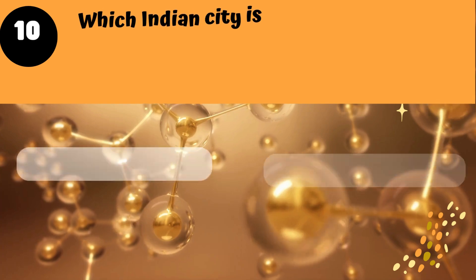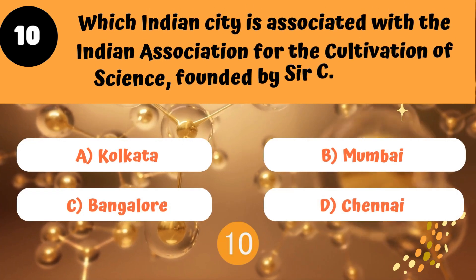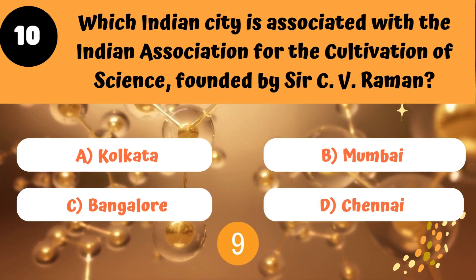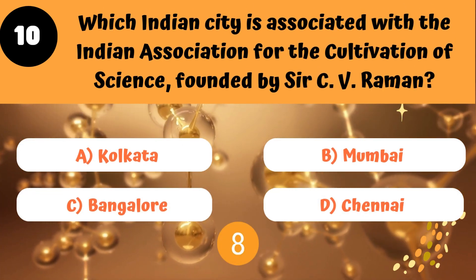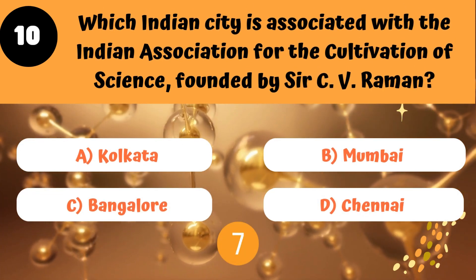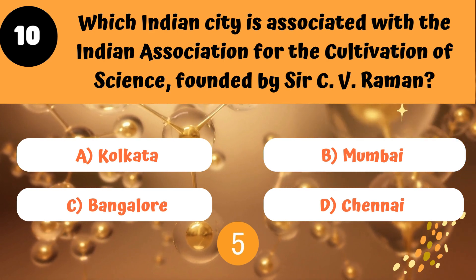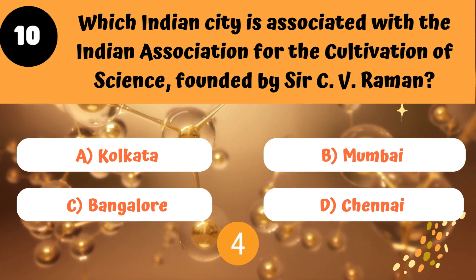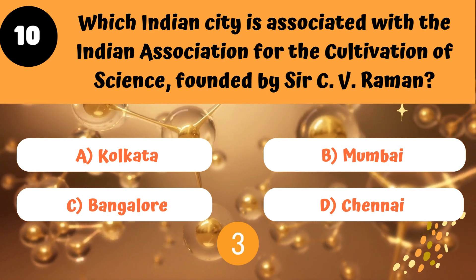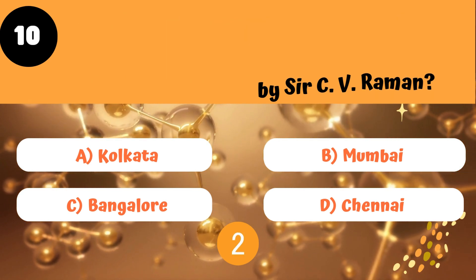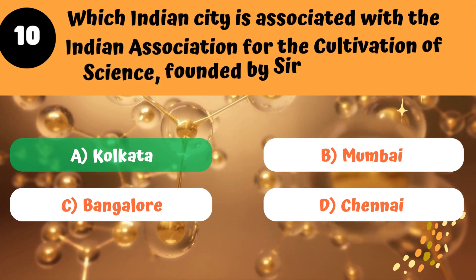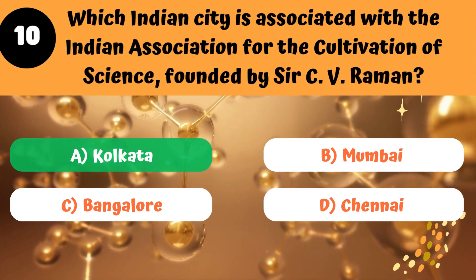Which Indian city is associated with the Indian Association for the Cultivation of Science, where Sir C.V. Raman worked? The answer is A, Kolkata.